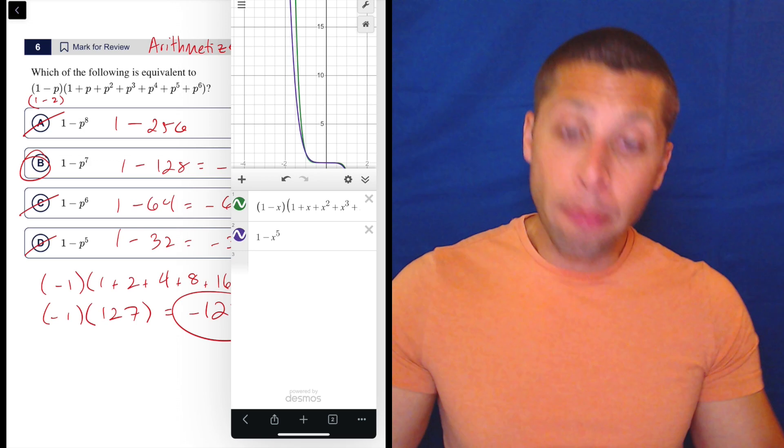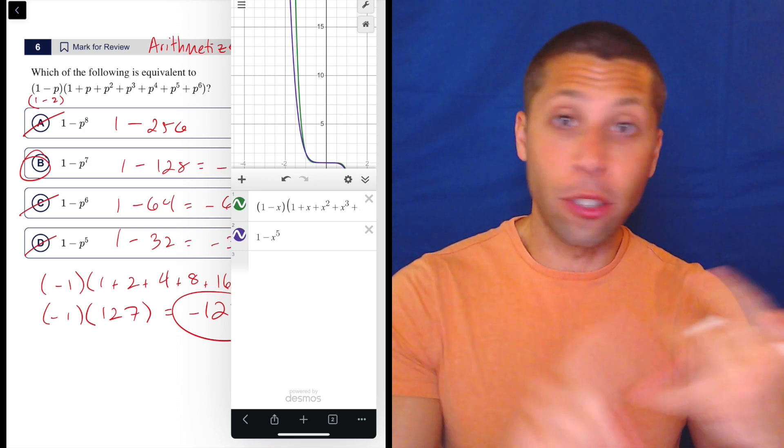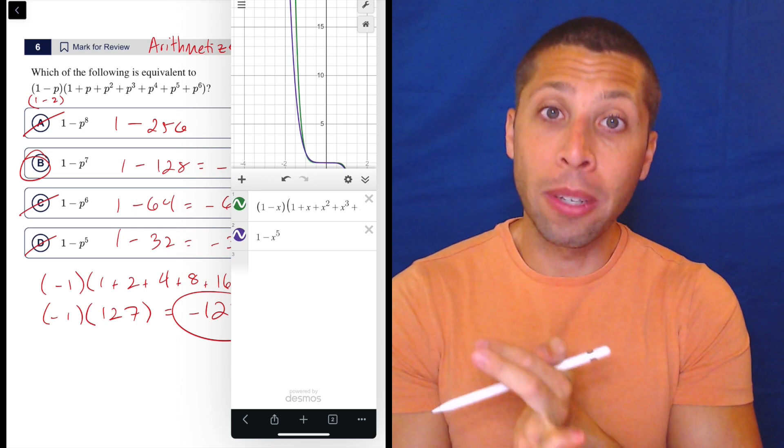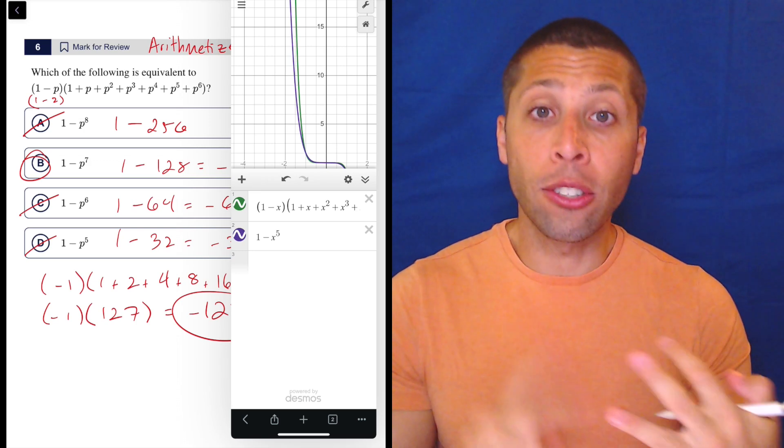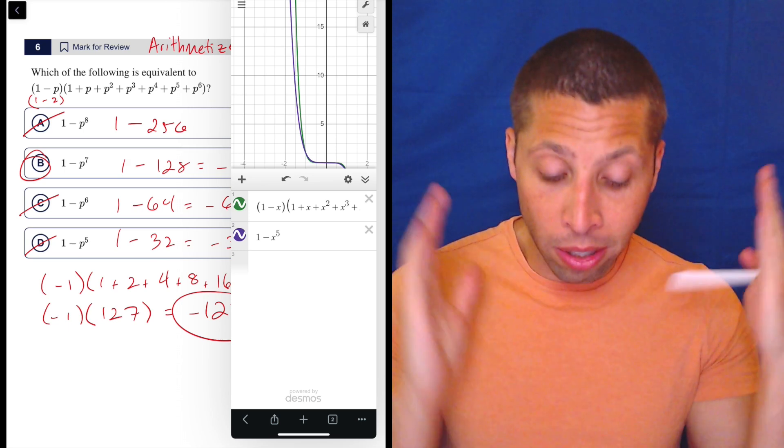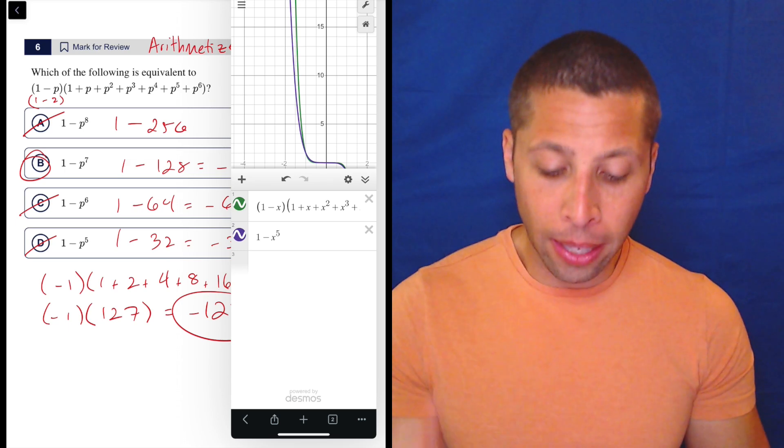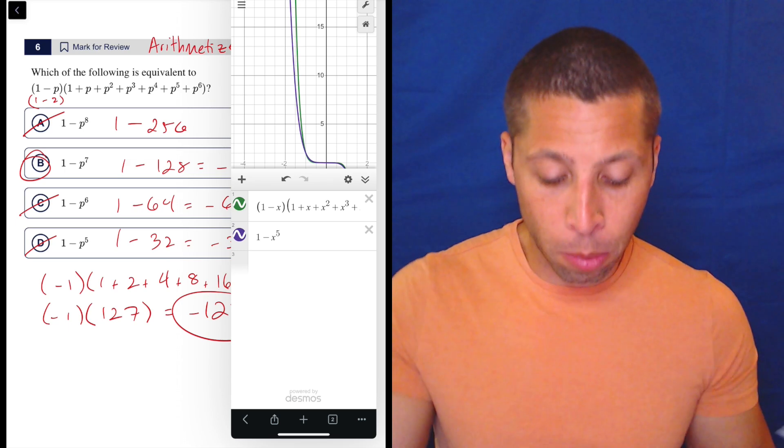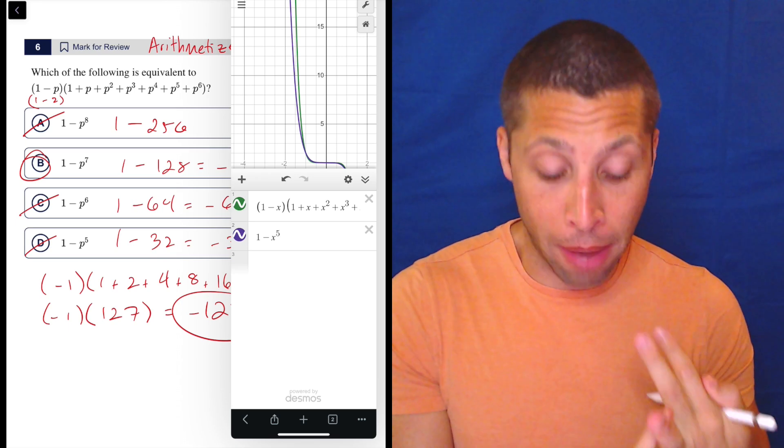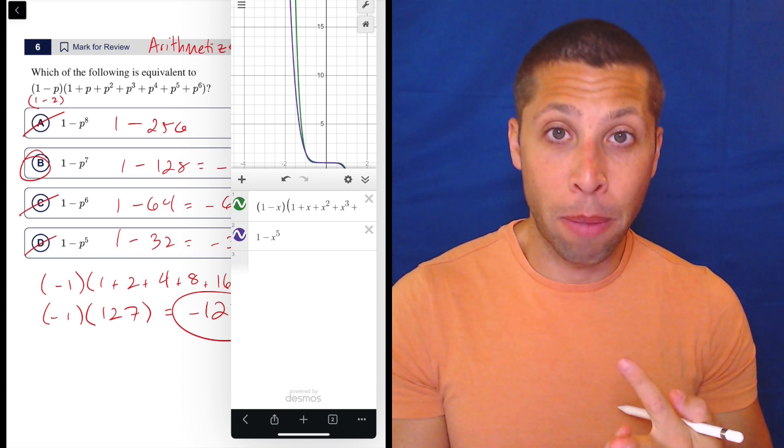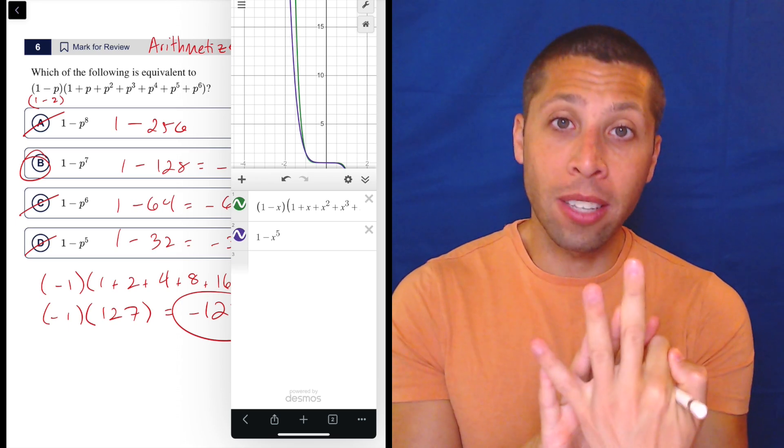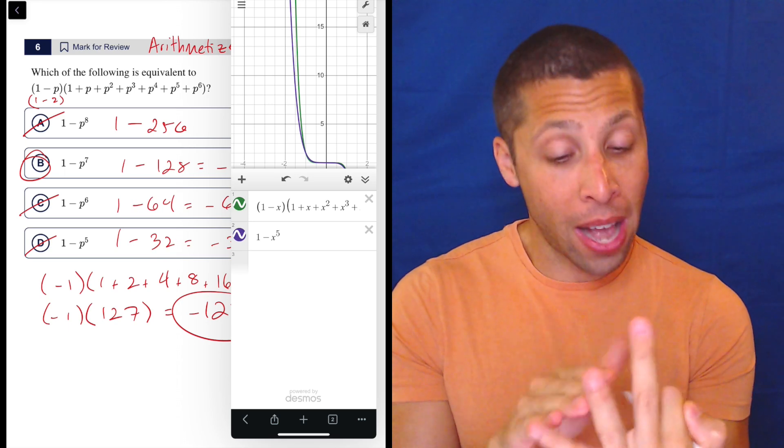So that's it. That's another way to do it. I am curious. Please comment. Would you rather just do the Desmos? Would you rather arithmetize here? I think regardless, you need to know that both will work. You need to look at this and instantly be like, I could do regular algebra. I could arithmetize because P doesn't matter. Or I could put this in Desmos and compare. And then decide which one is going to be the most reliable. The fastest, the most reliable.